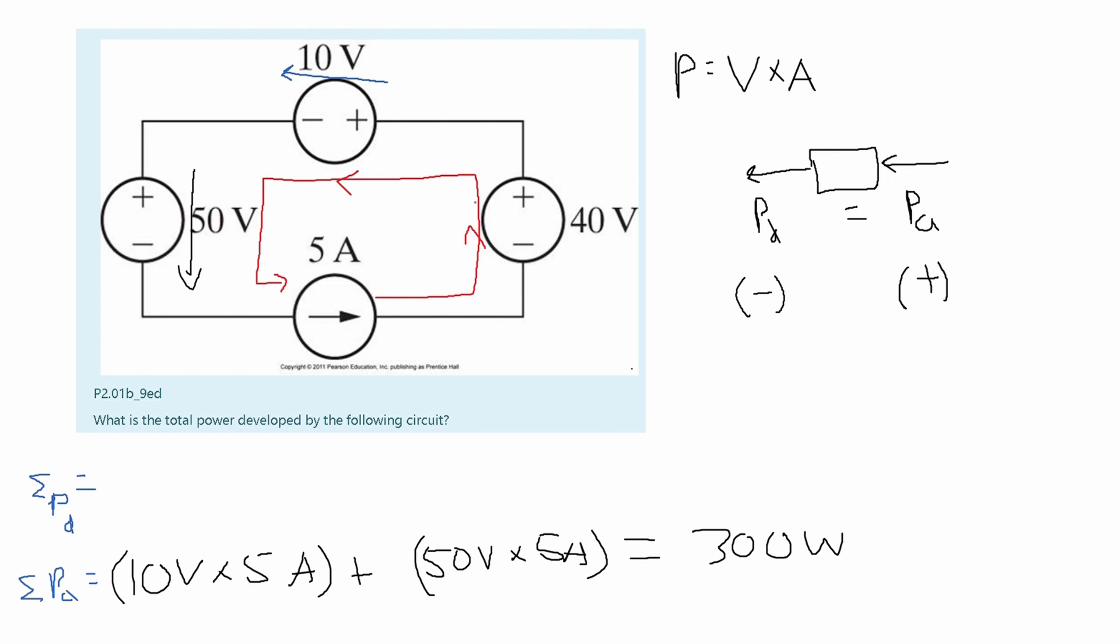Now for the power being delivered, we look at this 40 voltage right here. We can see that our voltage is going from positive to negative, which is in the opposite direction as our current. So we are going to have our 40 volts times our 5 amps. However, since it's being delivered, we have to have a negative sign up front. Now, this is only going to give us the value of negative 200. And we need this to be equal to negative 300, because the power being delivered has to be the same as the power absorbed, just negative.